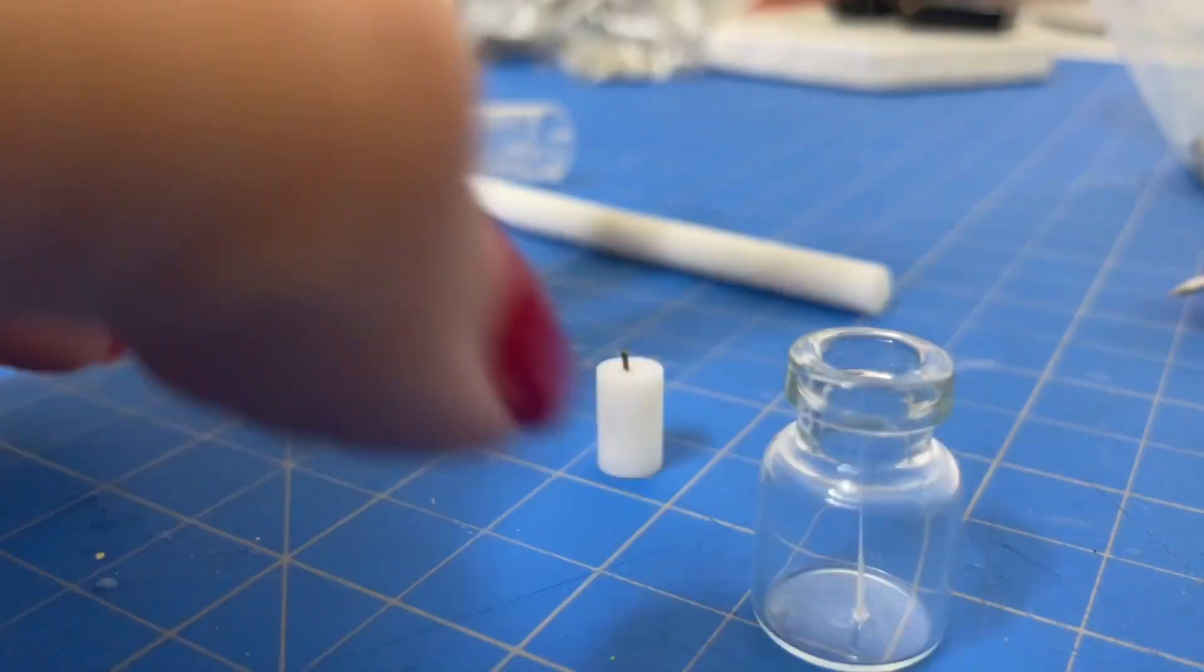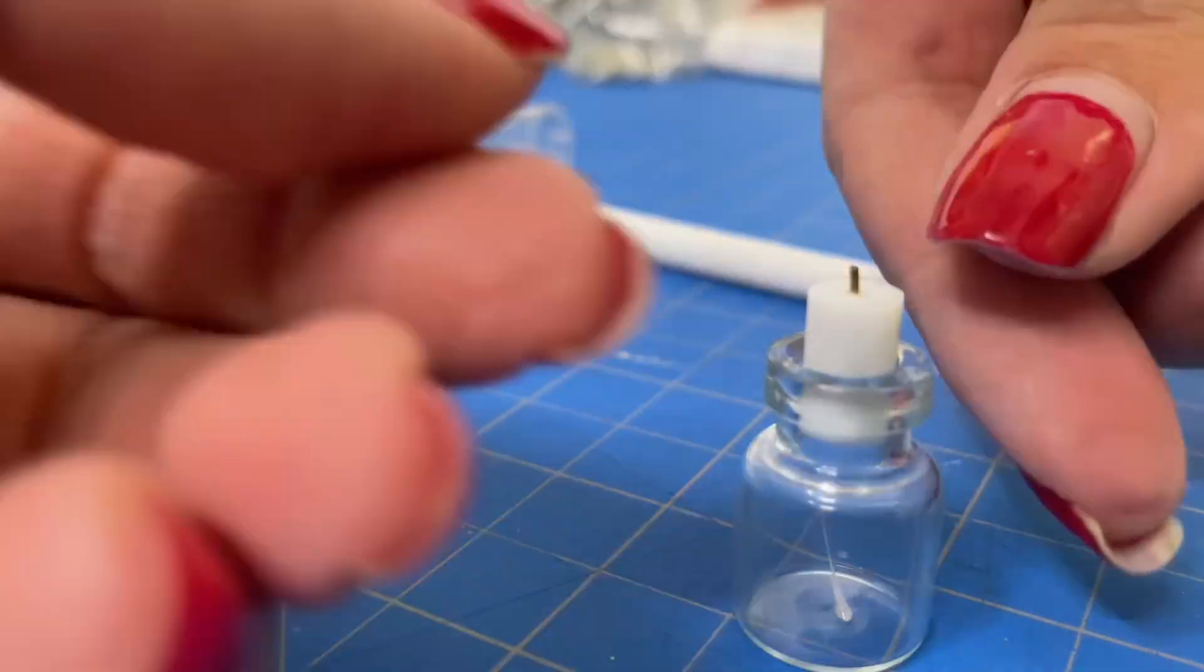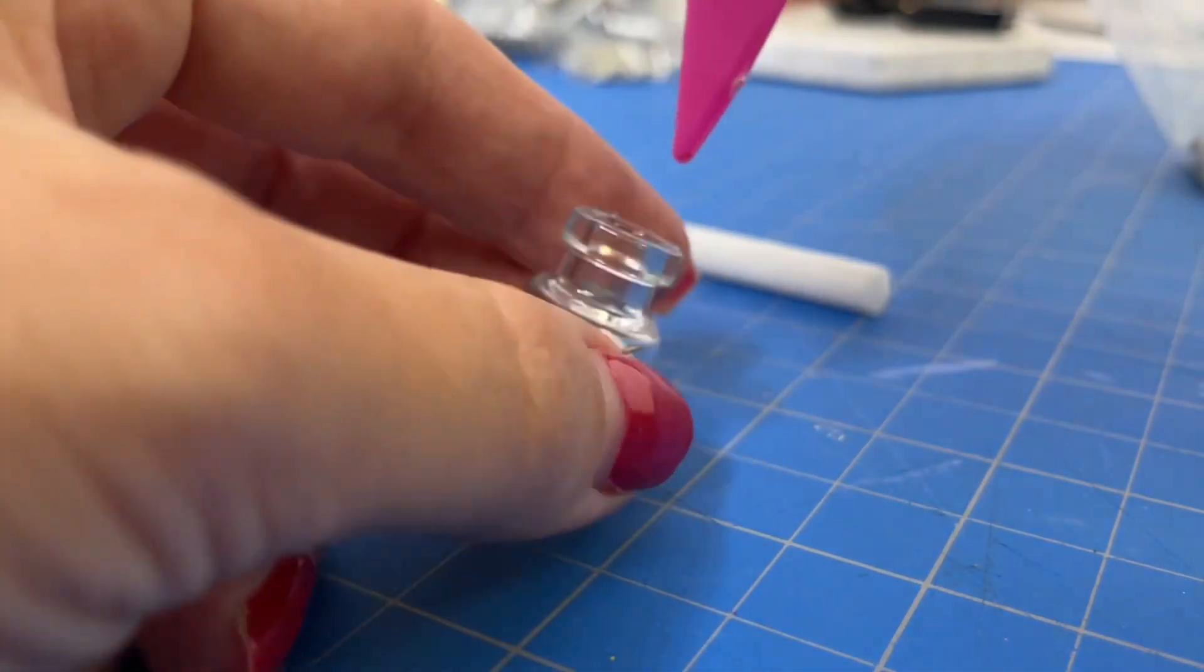And I'll do that using a toothpick. And then try to put my miniature candle in. And then I'm going to need some help with a tool just to get it in all the way.